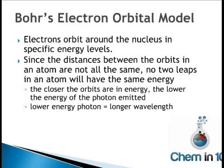Bohr developed what has since become known as the electron orbital model, because he believed that electrons orbited the nucleus much like planets orbited the sun, in specific energy levels. However, scientists have since found that Bohr's model is incorrect. We will continue our discussion of the electron in the next video on Quantum Mechanics.